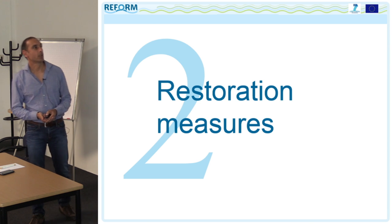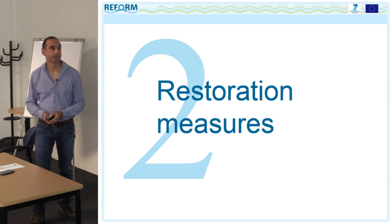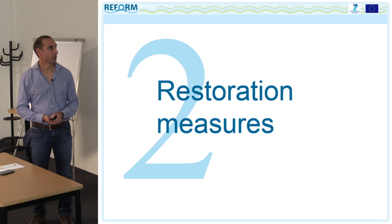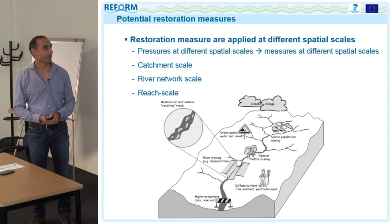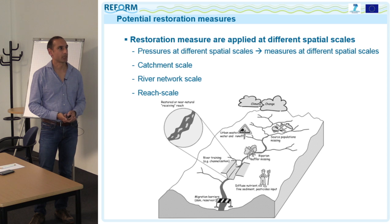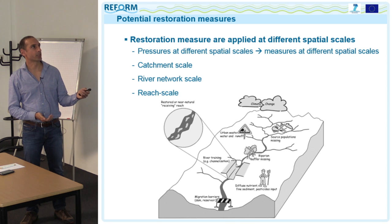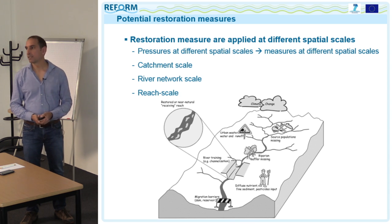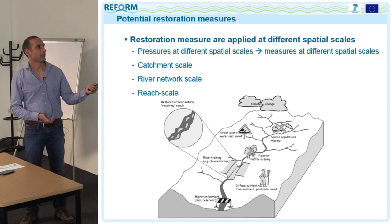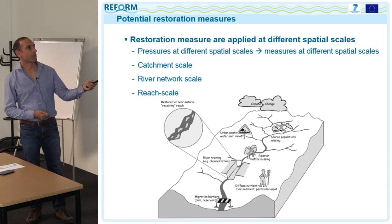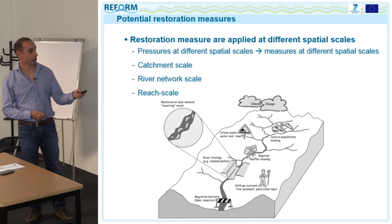Now, which restoration measures are available? Nikolai has already presented some possible restoration measures, and I would like to add some ideas. Because pressures operate at different spatial scales, measures must also be implemented at different spatial scales: catchment scale, river network scale, and reach scale.